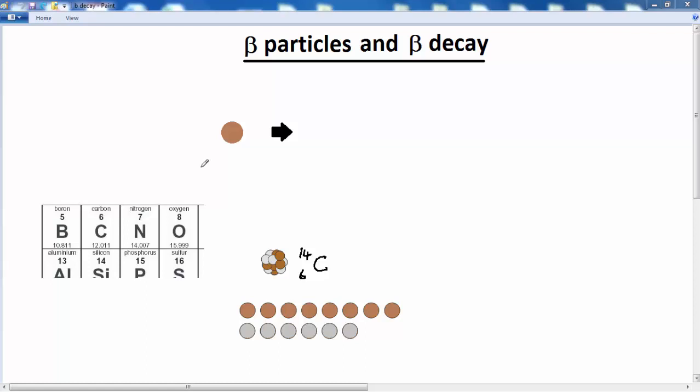In this lesson we're going to look at beta particles and beta particle decay. To do that we're going to take carbon-14 as an example. But before we look at carbon-14, what actually happens when beta decay occurs?